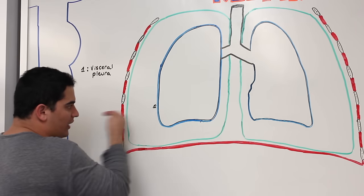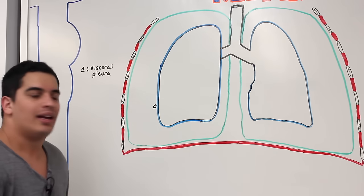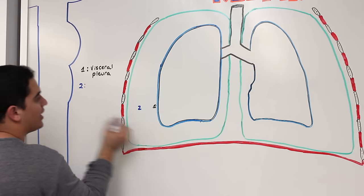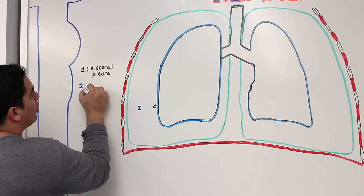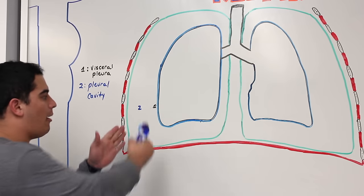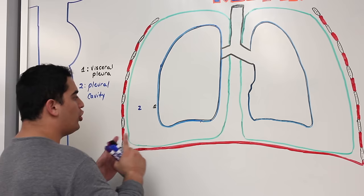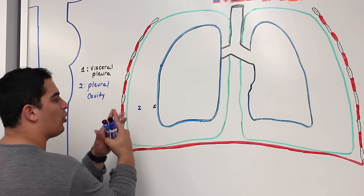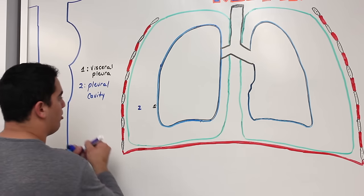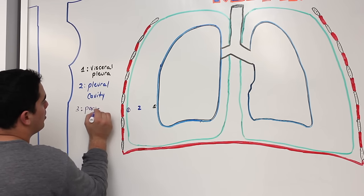Working our way out, there's a space — a hollow-like cavity with a little bit of fluid in it. This is number two: the pleural cavity. In the diagram I'm showing a space, but in the human body there actually is no space — it's a potential space. The visceral pleura is tethered or connected to the third layer, called the parietal pleura.